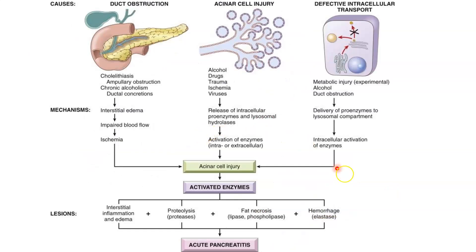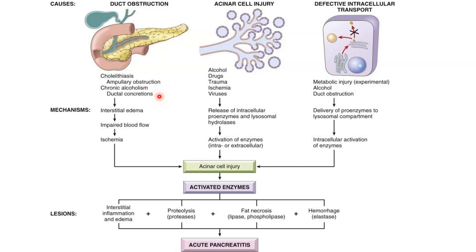This diagram from Robin's Pathology sums up the complete pathophysiology of AP. AP occurs due to acinar cell injury, which can be due to direct insult from alcohol, drugs, trauma, ischemia, or viruses, or due to duct obstruction from cholelithiasis, chronic alcoholism, or ductal concretions. This causes impaired blood flow and ischemia, which can damage the acinar cells.